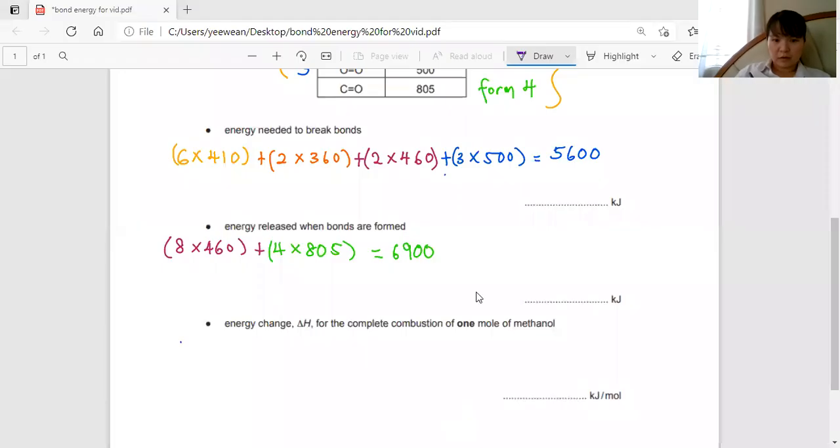To know the enthalpy change for one mole of methanol, I'm going to take the bonds broken, 5600, minus the bonds formed, 6900, because bonds broken is endothermic and bonds formed is exothermic. My answer is going to be exothermic.